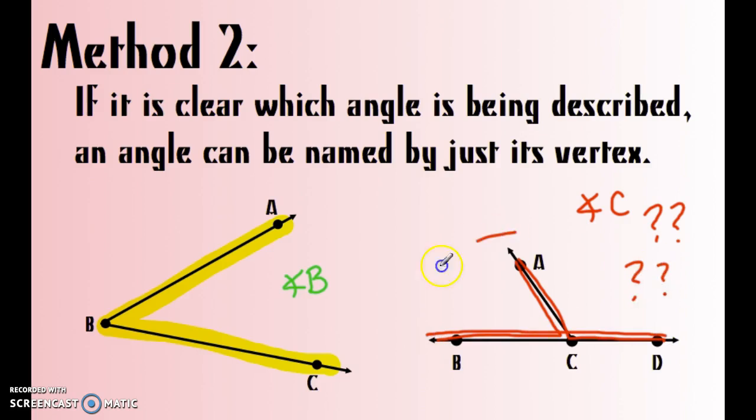So in this scenario where there's multiple choices, don't pick that one, just the vertex method, but if it looks like it's obvious which one, then the one angle, or just the vertex method, is a great way to name.